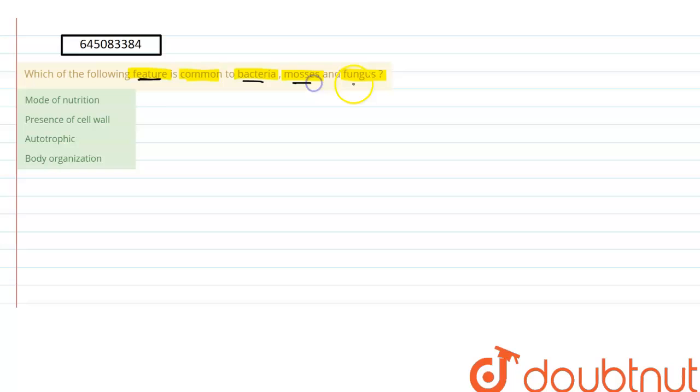First is mode of nutrition. When we talk about bacteria, bacteria can either be autotrophic or heterotrophic—they can show both types of mode of nutrition. And when we talk about fungi, fungi are saprophytic in nature.